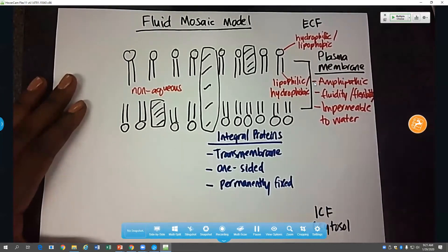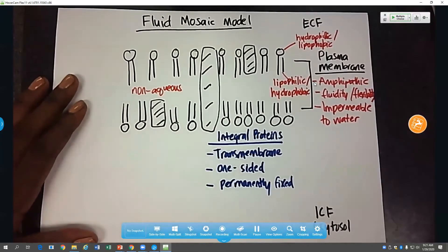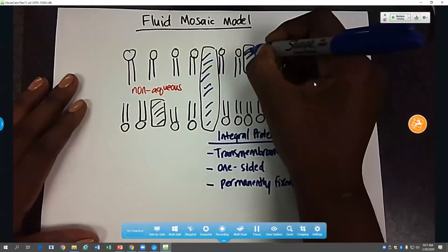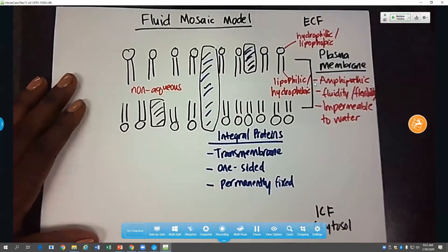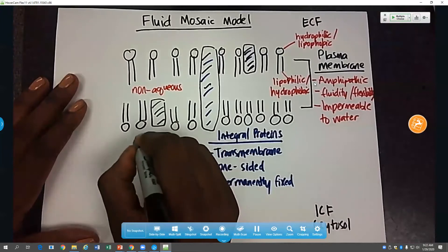Then we also have another type of protein, peripheral proteins. Peripheral proteins are located on the cytosolic side of the membrane.